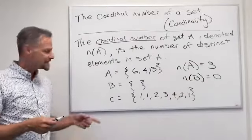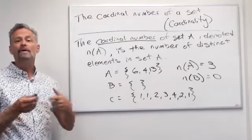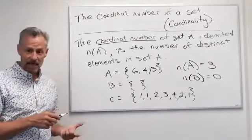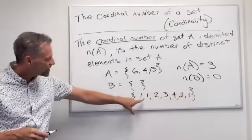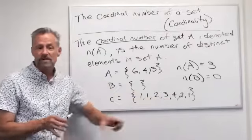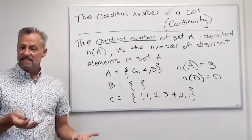And then lastly, I have set C here: 1, 1, 2, 3, 4, 2, 1. Well, remember, it's the number of distinct elements. I don't double count the 1s. So if I look, I have 1s and 2s and 3s and 4s. There are only four distinct elements I have. So n(C) is going to be 4.